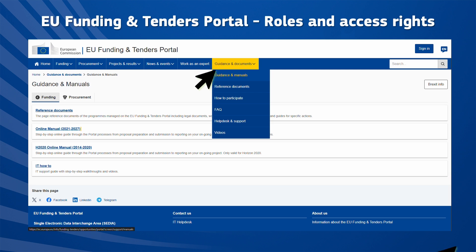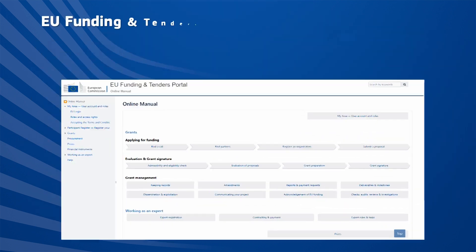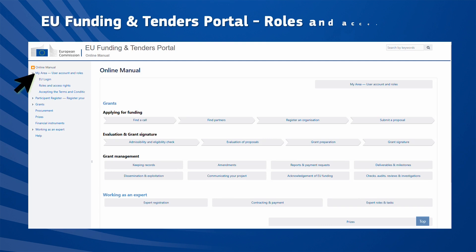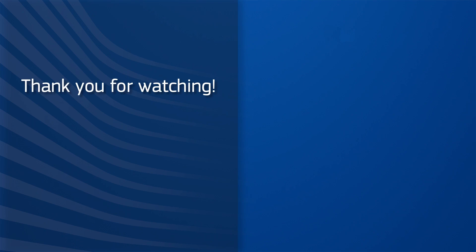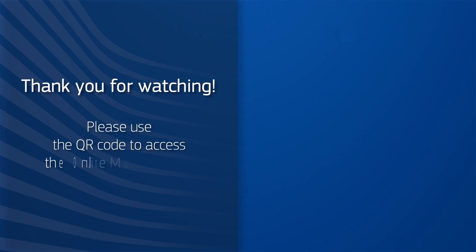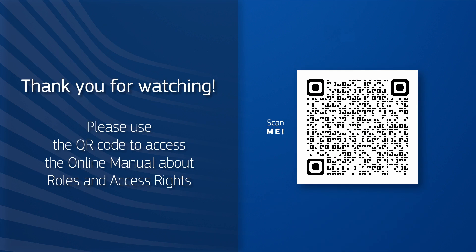To access detailed information on the roles and access rights, click on the 'Guidance and Documents' navigation tab, then on 'Guidance and Manuals', and select the online manual. In the section 'My Area' you will find the roles and access rights. Thank you for watching. Please use the QR code to access the online manual about roles and access rights.